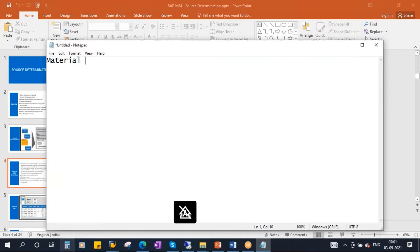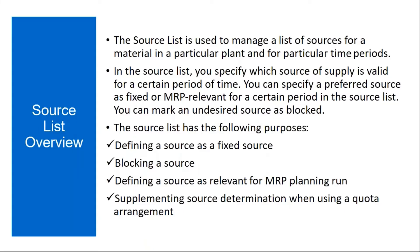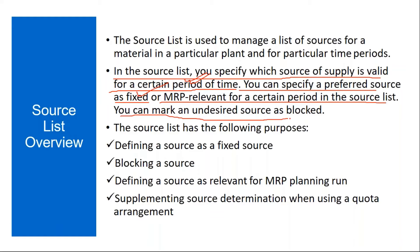Suppose in your company you have a material called ABC123. This material is purchased from different suppliers — vendor one, and so on. In the source list, you maintain this information: for a particular material, who are all the suppliers. In the source list, you specify which source of supply is valid for a certain period of time. You can also make a vendor a fixed vendor, and you can mark an undesired source as blocked after a certain period. I will show you this in the system.